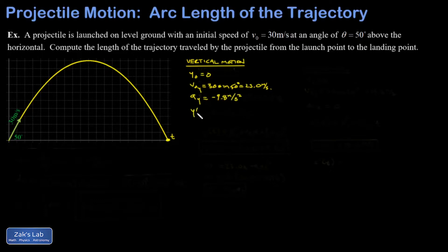So I can write down an equation of motion for the y coordinate using the standard kinematics formula and plugging in all the values. So y of t is going to be 23.0 t, and then half of 9.8 is 4.9, so minus 4.9 t squared.